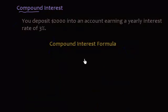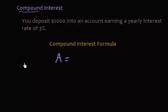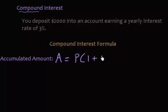Depending on where you're learning this material, the formula may look a little different due to different notation or simplification, but all these formulas are the same. The compound interest formula is: A = P(1 + r/m)^(mt), where A is the accumulated amount — the total money you have after however many years using compound interest — and P is your original principal.